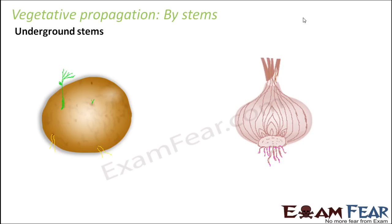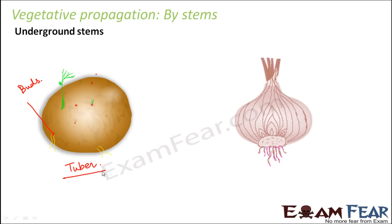Let us look at each of these structures one by one. On the potato, you would have seen these small dotted structures — these structures are called buds, which are often called the eyes of the potato. These buds are the areas where aerial shoots arise in favorable conditions. The name given to the underground stem of potato is tuber.